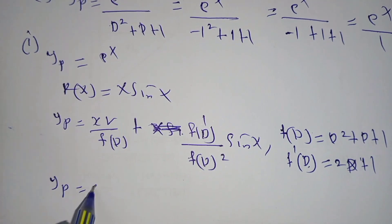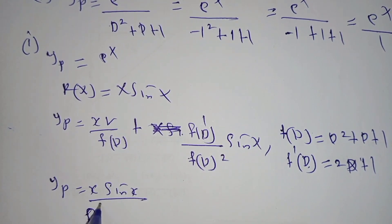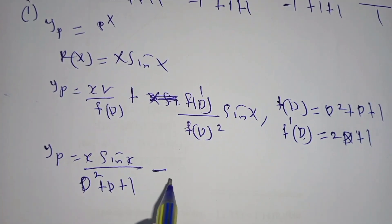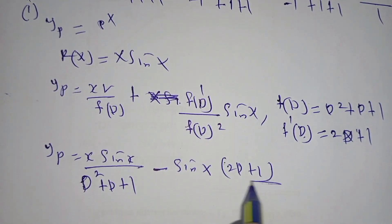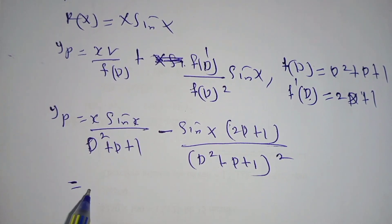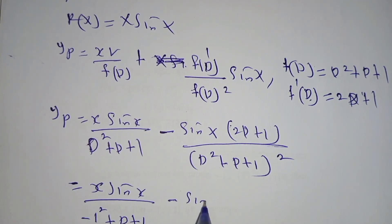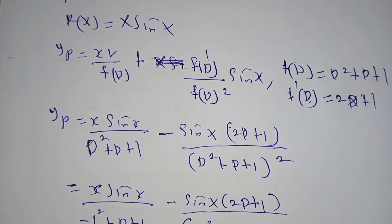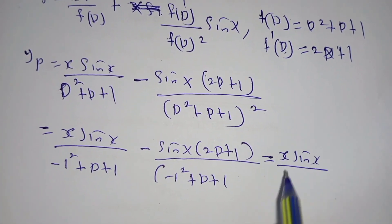Starting with the formula, the particular integral equals x·sin(x) divided by (D² + D + 1), minus sin(x) multiplied by (2D + 1) divided by (D² + D + 1)². Substituting D² = −1: we get x·sin(x) over (−1 + 1 + 1) minus sin(x)·(2D + 1) over (−1 + 1 + 1)².